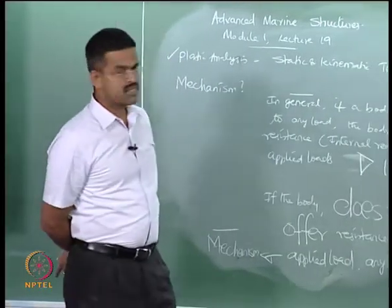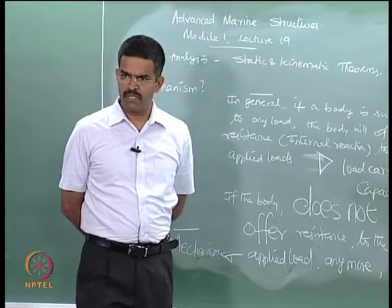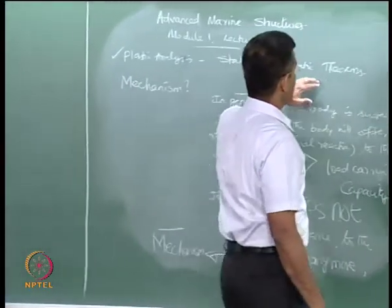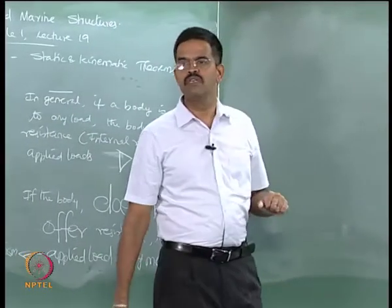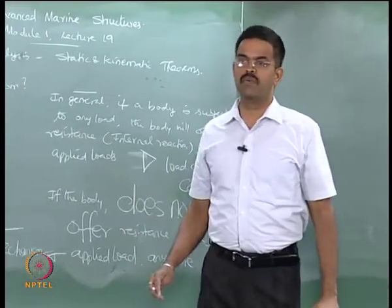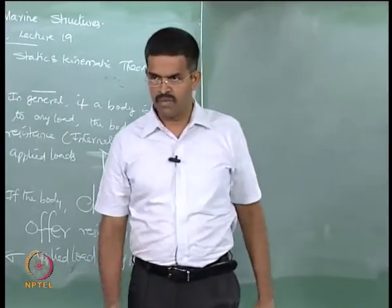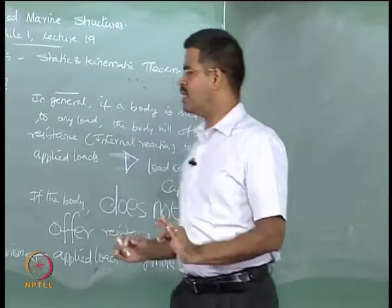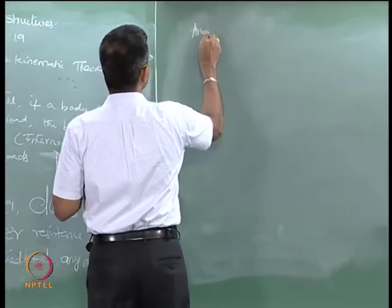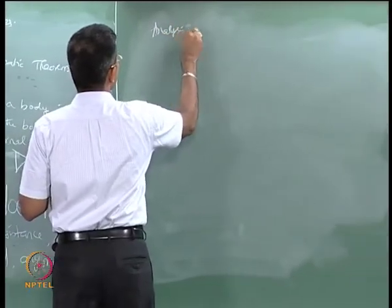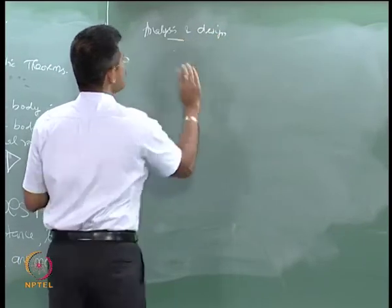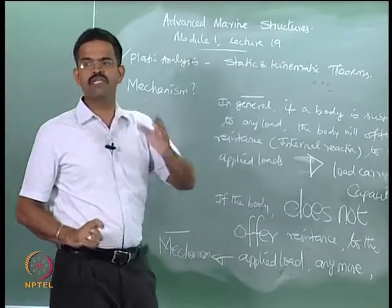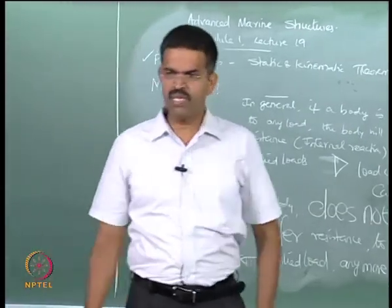So the structure becomes a mechanism in the ultimate limit state design methodology. There are two theorems available with which we can easily find out the plastic moment of resistance of a given section or the collapse load a structure can sustain. First, let us understand the difference between analysis and design — because I am talking about plastic analysis here, whereas ultimate limit state is a design mechanism. What is the difference between these two?